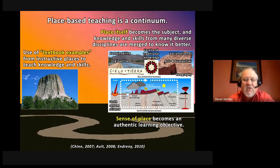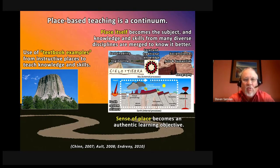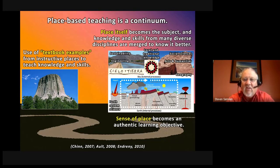It's important to know that place-based teaching is a continuum. You start by simply recognizing that the examples we use to teach geoscience are themselves places — using textbook examples from instructive places, identifying them as places, giving the name, and saying something about how important they are to the people who live there or to a particular group. That starts you on a trajectory toward a course that's completely about place.